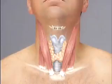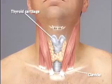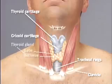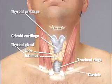An understanding of the following midline structures is also key to a successful examination: the thyroid cartilage, readily identified by the notch on its superior edge; the cricoid cartilage; the tracheal rings; and the thyroid gland. The isthmus of the thyroid gland lies across the trachea, below the cricoid.